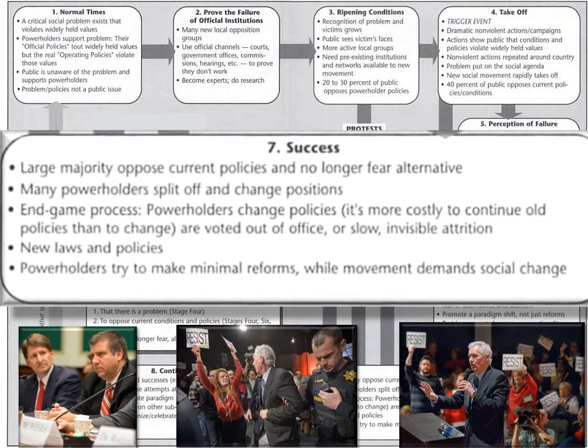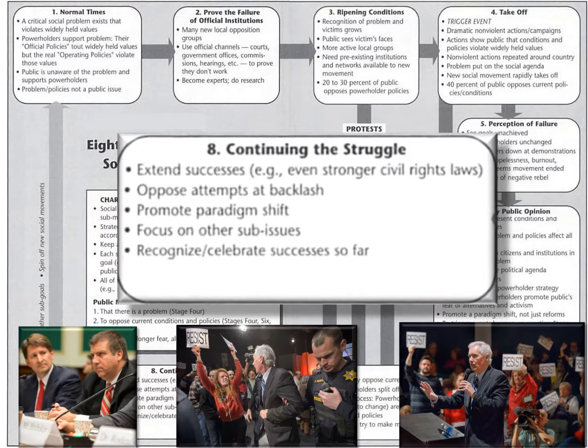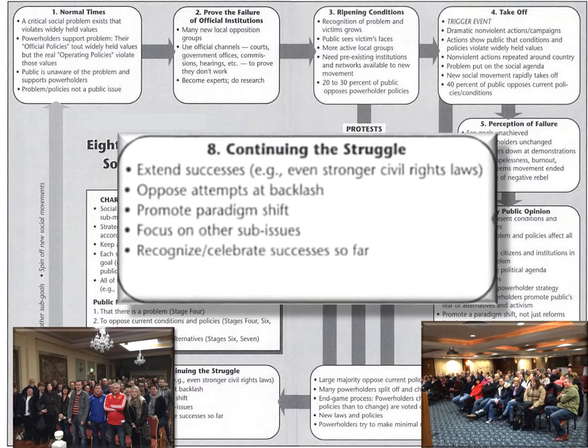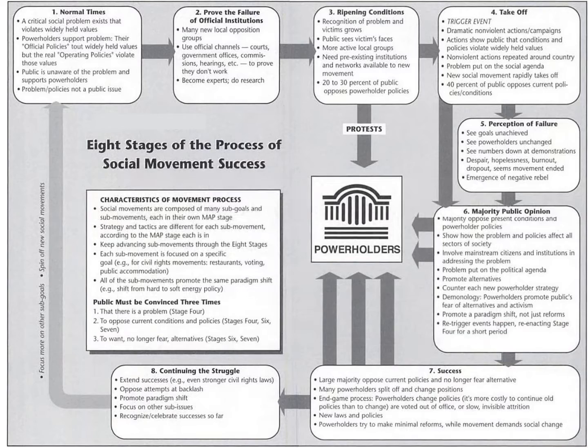And this is when new laws and new policies can be enacted. But the movement's work is not done when these new policies are put into place. Now, it must turn its attention to continuing the struggle, extending its successes, and opposing attempts to organize some kind of backlash. And so these are the eight steps of Moyer's Movement Action Plan, which today is recognized as one of the most effective strategic models for waging nonviolent social movements.